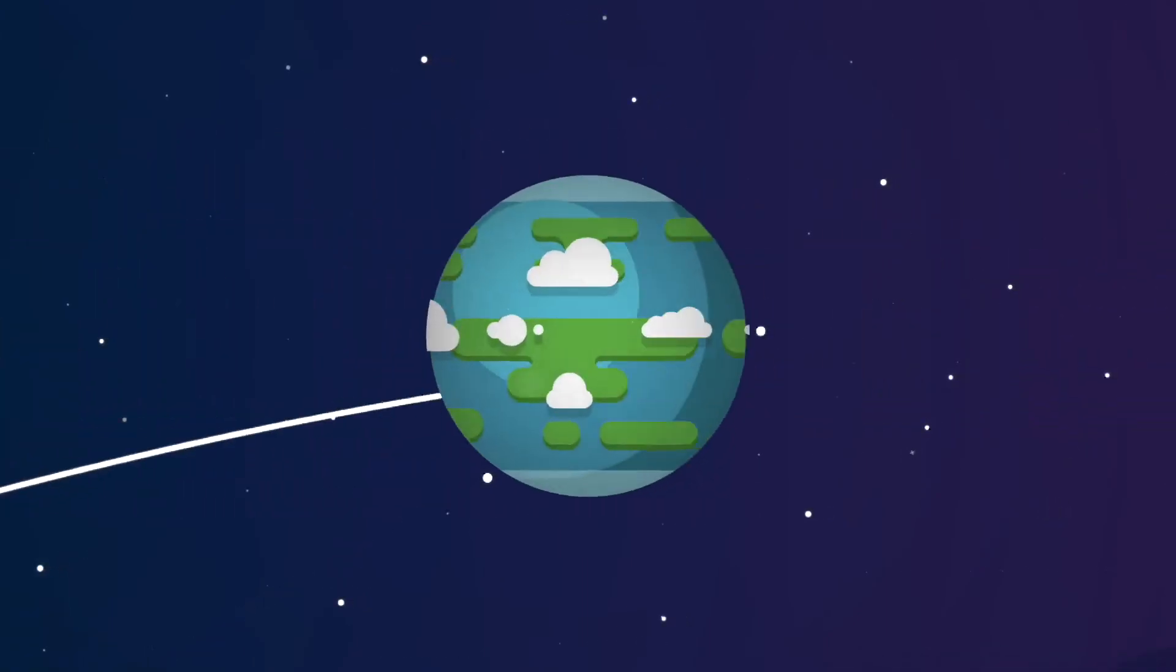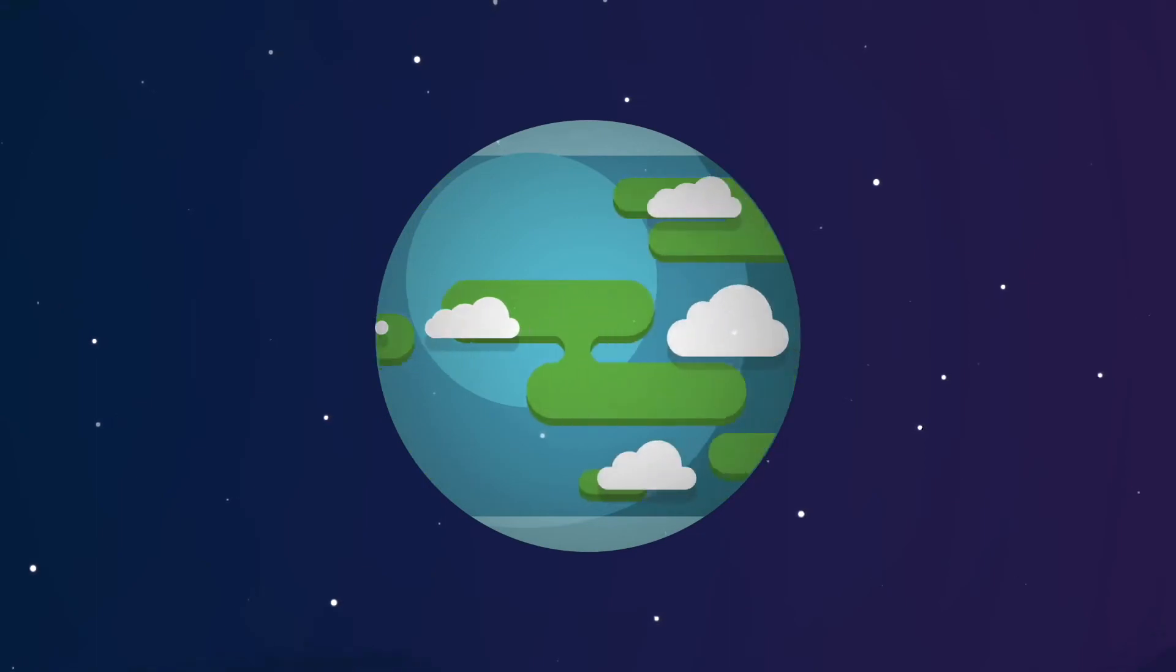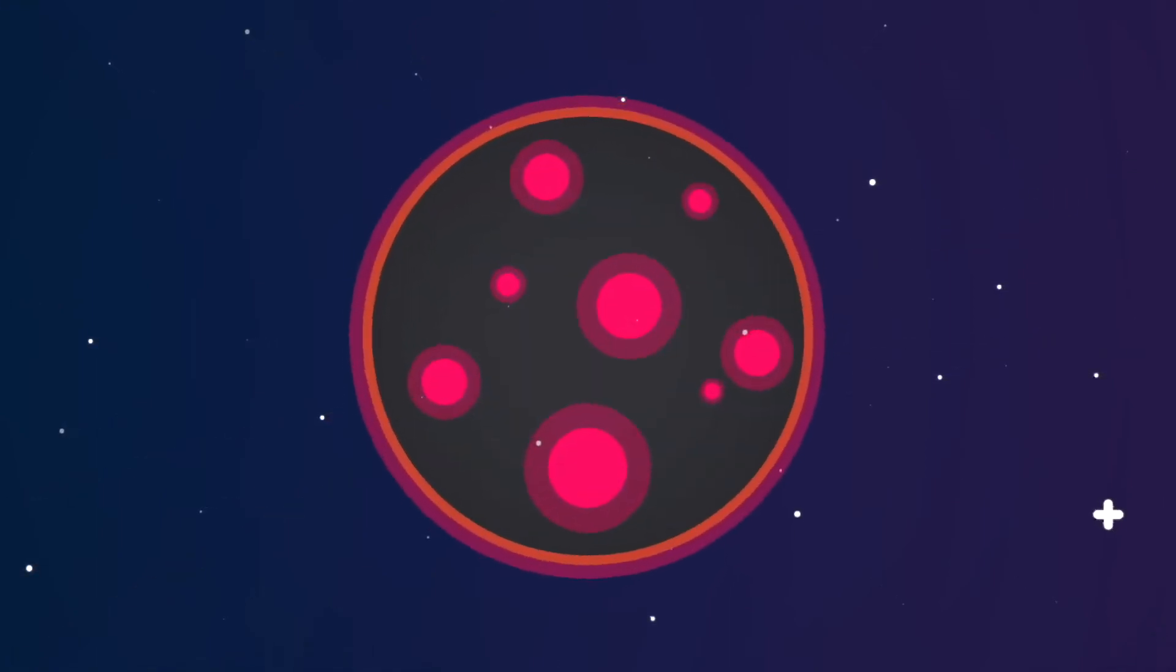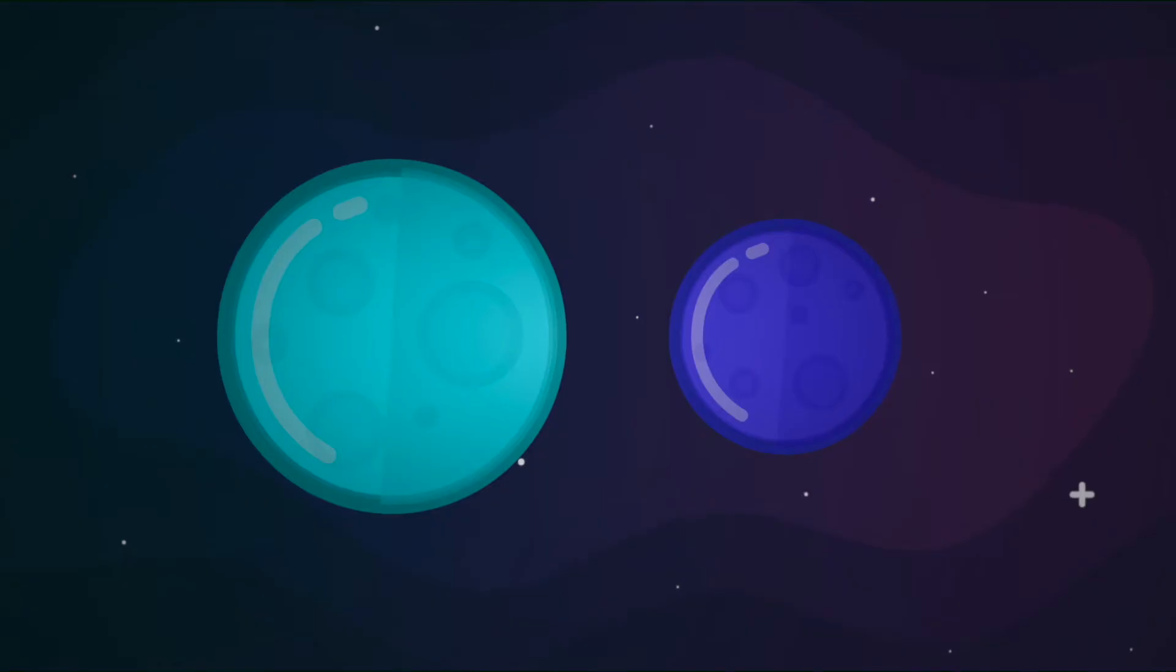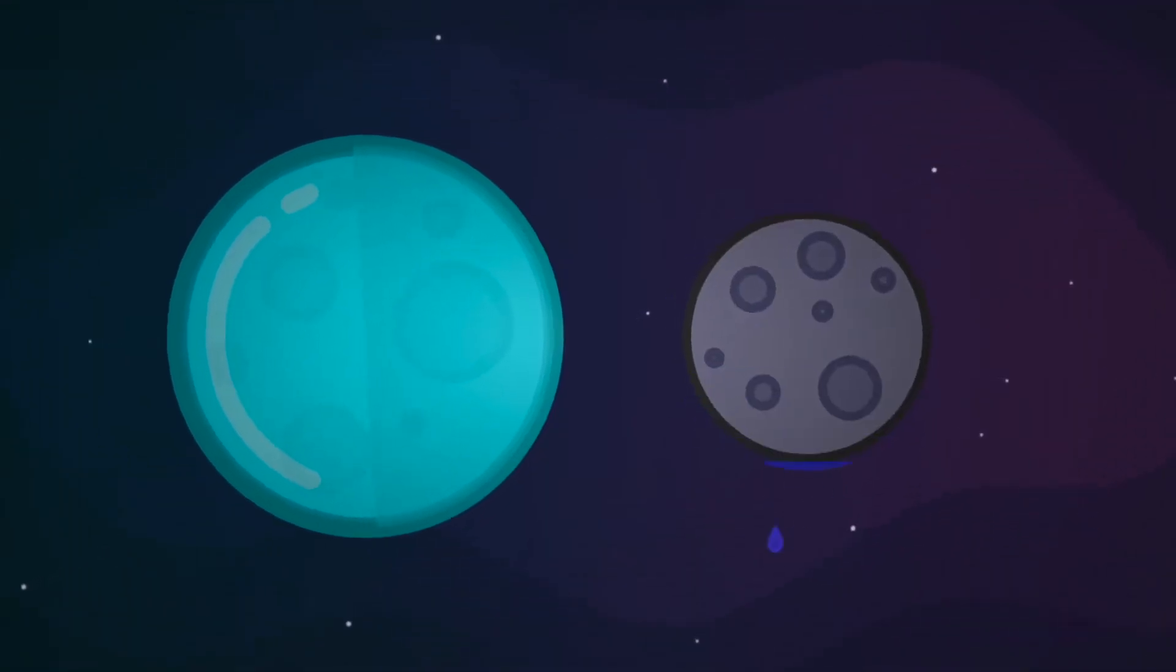Either way, one thing's for sure, Earth will have become a planet completely unsuitable for life as we know it. Even the icy giants of the outer solar system will begin to thaw from our expanding sun.